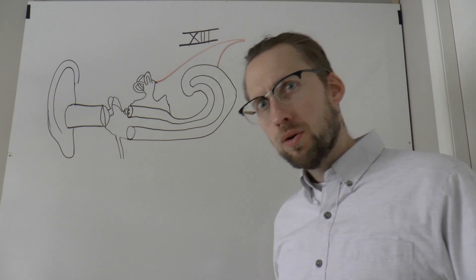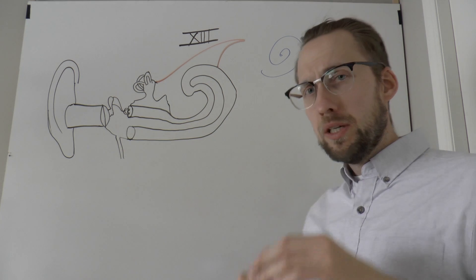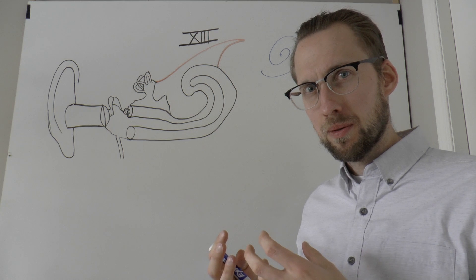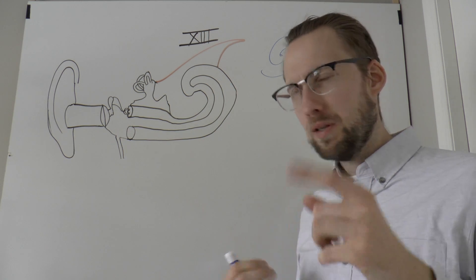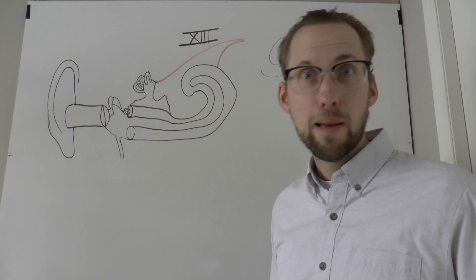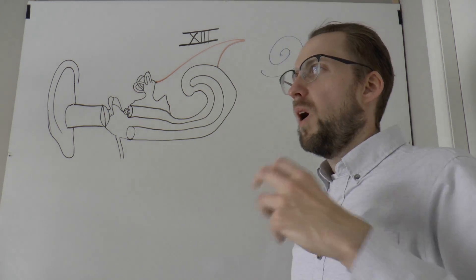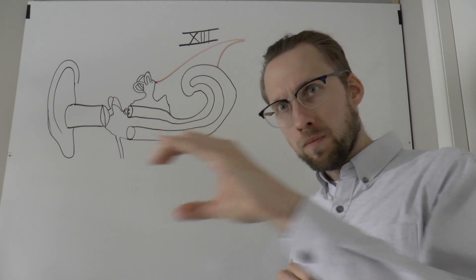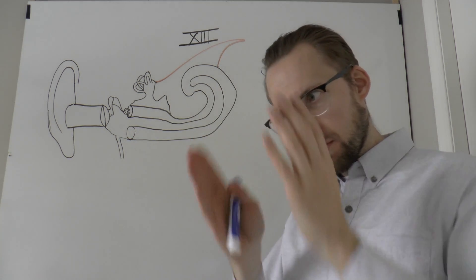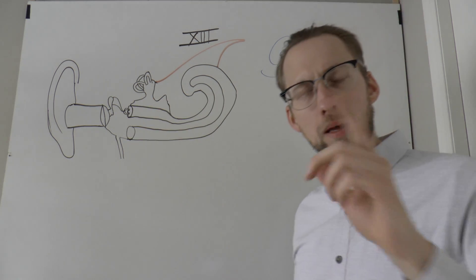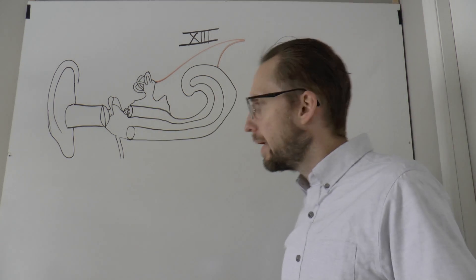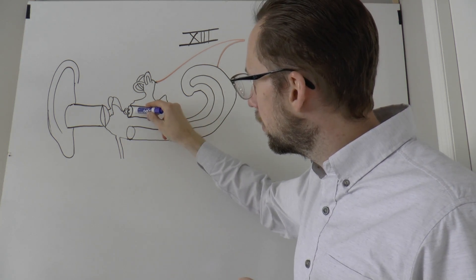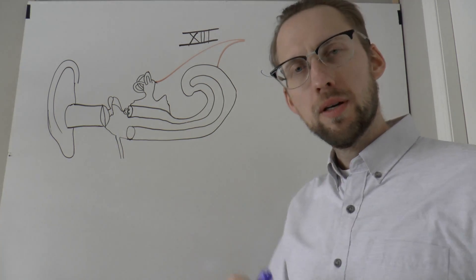The stirrups connect to the oval window. The oval window is a membrane in the cochlea. The cochlea is made out of pretty hard material — that's why we call this whole structure the bony labyrinth. But the oval window is soft, so those stirrups push in and out onto that membrane.